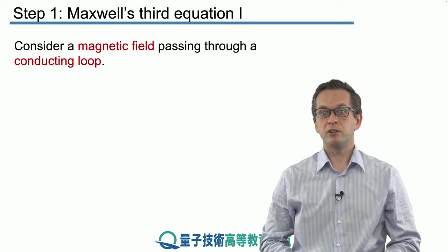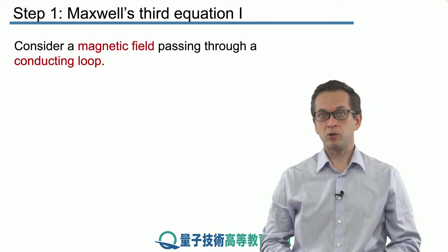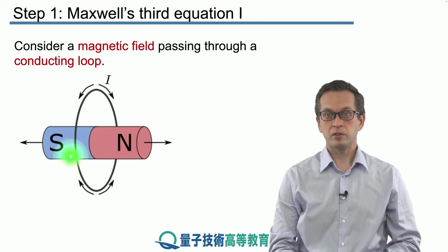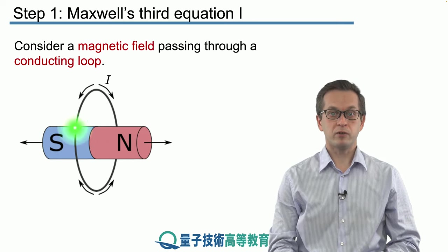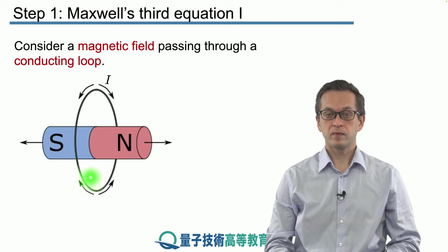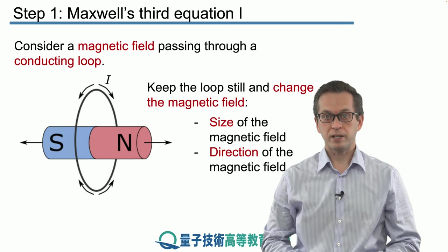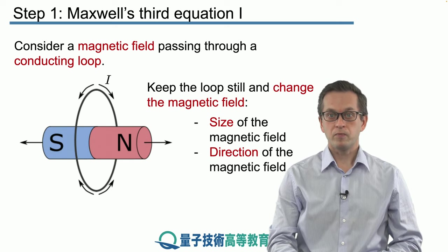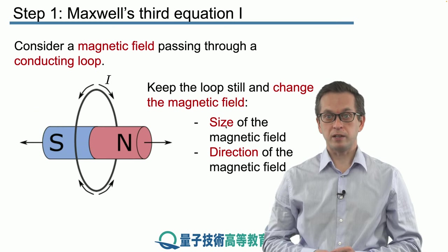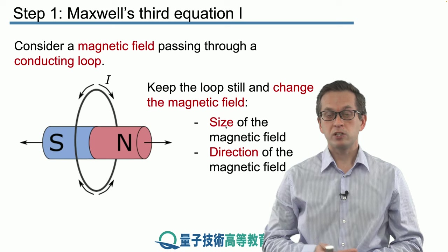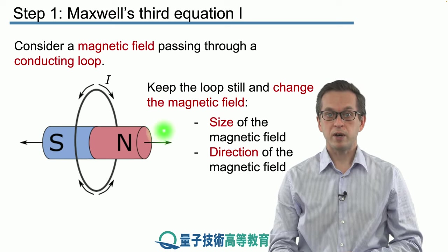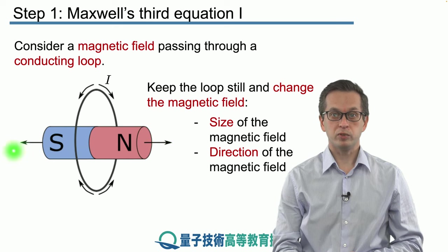Let's begin by considering a magnetic field passing through a conducting loop. We have the following setup: a source of magnetic fields, for example a bar magnet, and this is our conducting loop. Now what happens when we change the magnetic field? We can do that by changing the size of the magnet so we increase the magnitude of the magnetic field, or we can change the direction of the magnetic field by simply moving this magnet in and out of the loop like this.